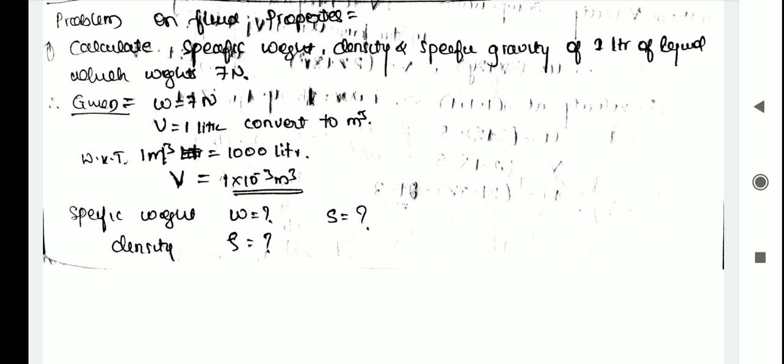Write down the given data: weight W equals seven newton, and volume is one liter. Converting to meter cube — since one meter cube equals one thousand liters — volume V becomes 1 × 10⁻³ meter cube.